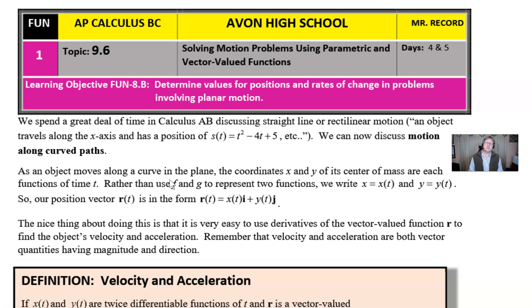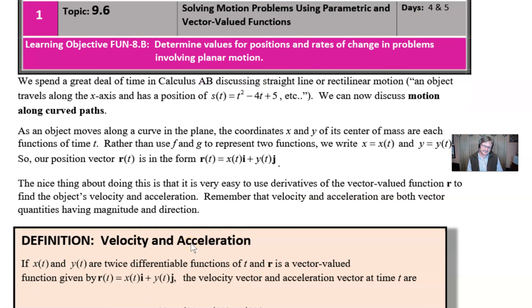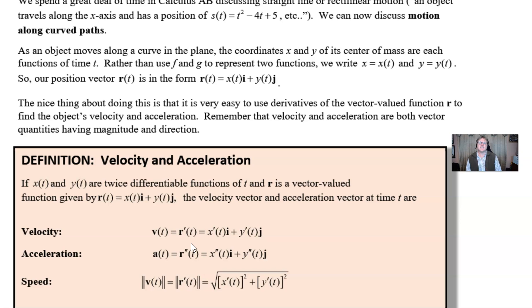Rather than using f and g to represent our i and j components, we're just going to use x(t) and y(t) because that's what they stand for. The component in front of i is x, the component in front of j is y. The nice thing about doing this is that it's very easy to use derivatives of the vector-valued functions to find the object's velocity and acceleration. Remember, velocity and acceleration are both vectors, so they have magnitude and direction.